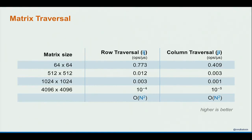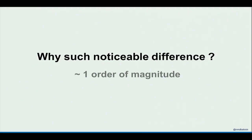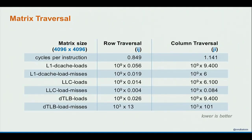If you profile these two programs for different matrix sizes — 64, 512, 1024, and so on — measuring operations per microsecond, in all cases the row traversal was better: it had more operations per millisecond, meaning it was more efficient. For example, at size 1024 the difference is around one order of magnitude. Yet initially both have the same complexity. The question is why — and the answer lies in hardware caching.